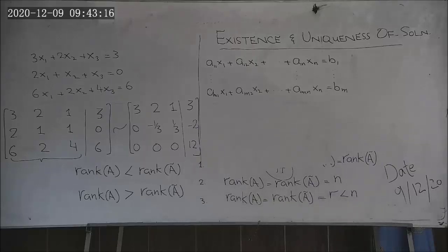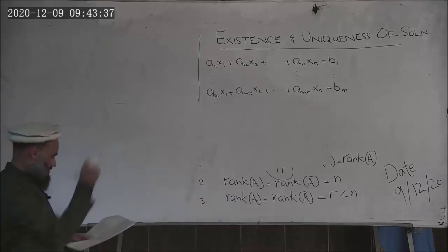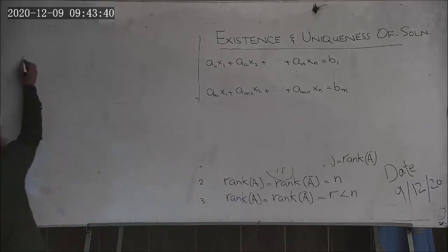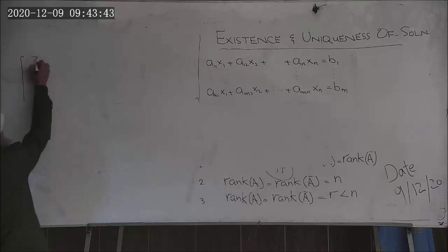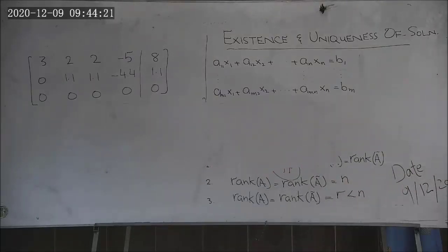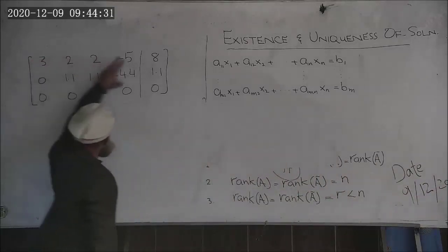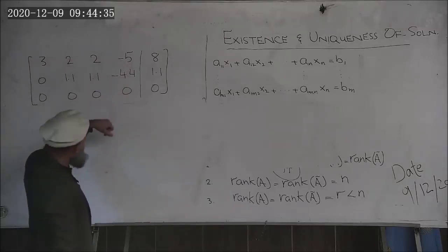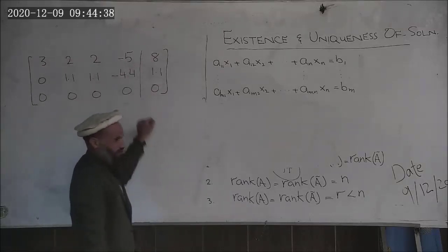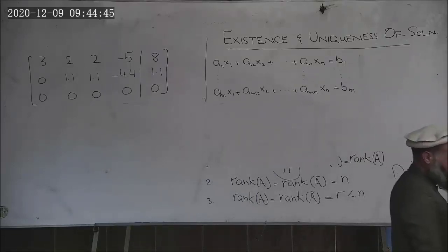This corresponds to the example from a previous lecture. After constructing the augmented matrix and reducing it to echelon form, rank of A was 2 and rank of A-tilde was also 2 — so the system is consistent and a solution exists. There were four unknowns, and rank equals 2, which is less than N equals 4, so there exist infinitely many solutions.